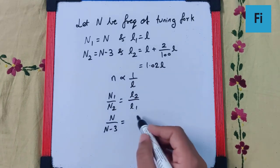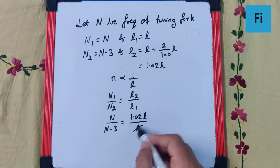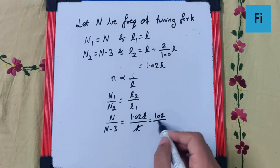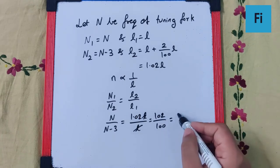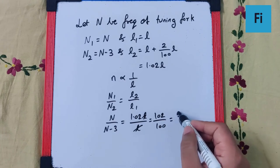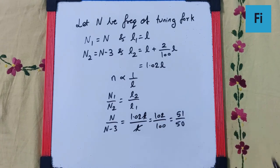1.02L upon L, that's like 102 by 100 or 51 by 50. Now we should just cross multiply this.